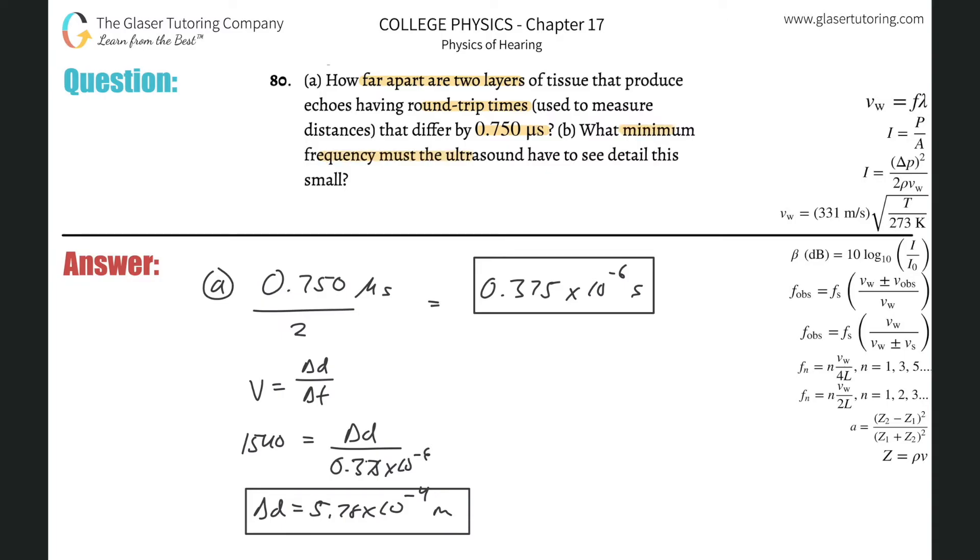Letter B: What minimum frequency must the ultrasound have to see detail this small? If this is the size of the material we're trying to observe, then that minimum size correlates with the wavelength. So the wavelength of the wave needs to be 5.78 times 10 to the minus 4 meters.